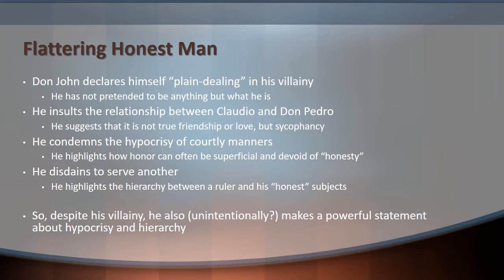He disdains to serve another. He highlights the hierarchical relationship between a ruler and his 'honest' subjects. So, interestingly, despite the fact that Don John is the villain of the play, he's also making a powerful statement about the hypocrisy of manners, the hypocrisy of flattery and compliments, and how hierarchy can pose a problem for relationships that are supposedly honest friendships. This is another case where a character might be unintentionally revealing things — both about himself and about the larger issues in the play — that he doesn't quite understand himself.